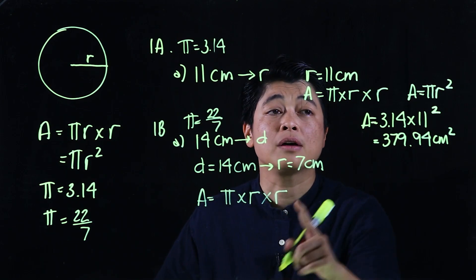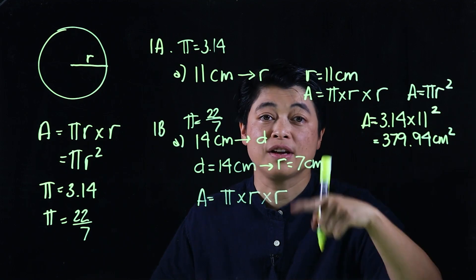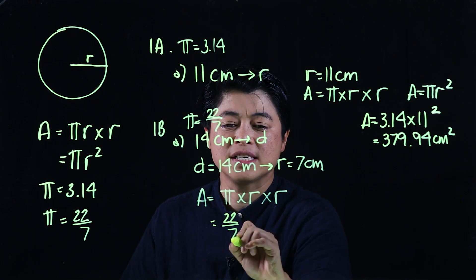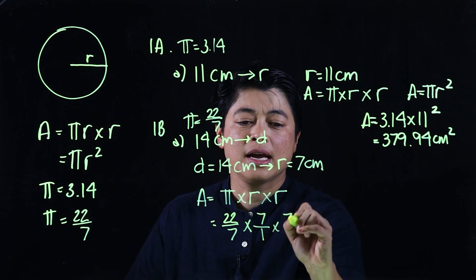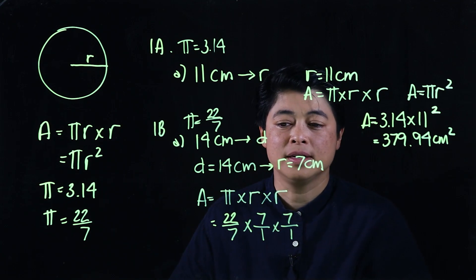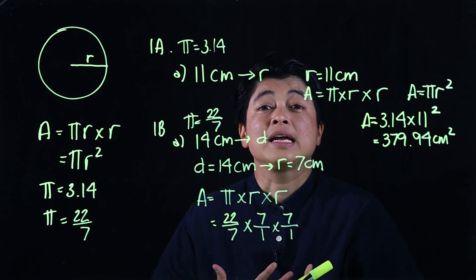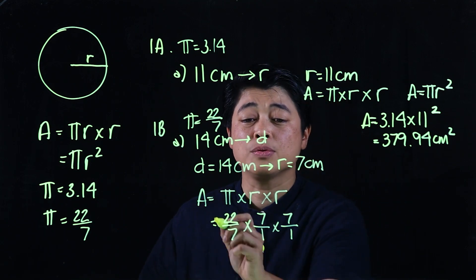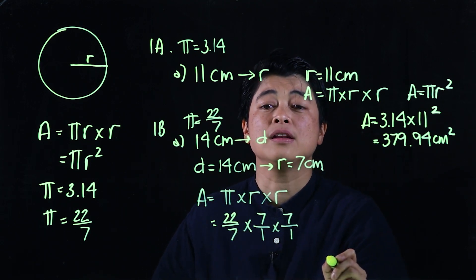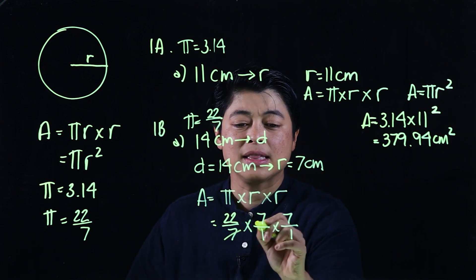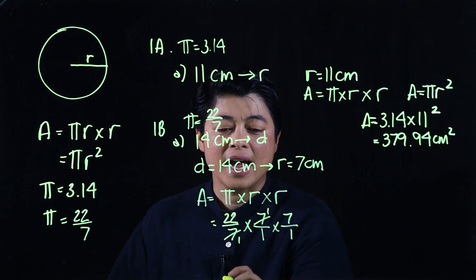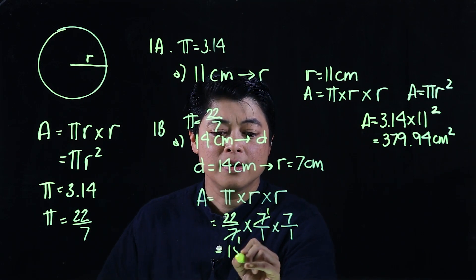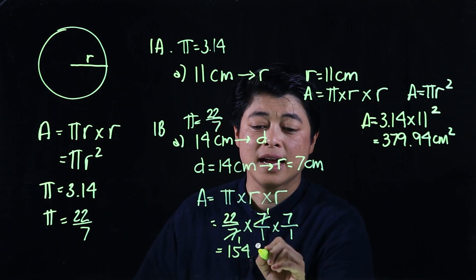So this is 22 over 7 times 7 over 1 times 7 over 1. So again, whole numbers can be expressed as a fraction and we want to because we want the numerator to cancel with the denominator, which means that and that cancels one and one. So our answer should be 154, and again since this is area, centimeters squared.